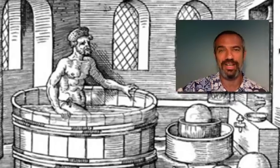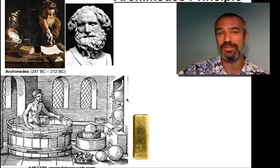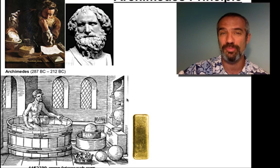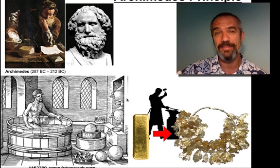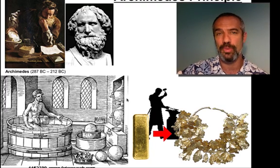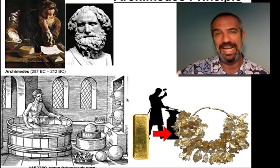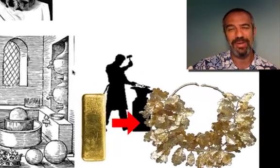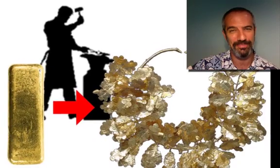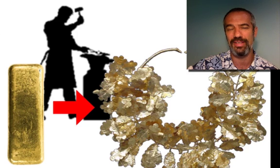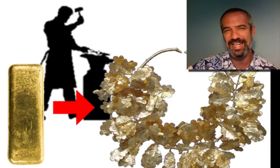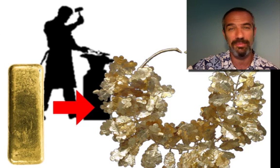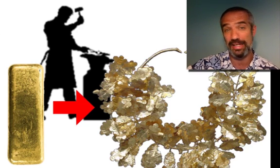King Hiero of Syracuse had taken a block of gold and given it to the goldsmith to make a crown out of — not the kind he was going to wear, but for a statue in a temple he was building. He got the crown back and thought it looked rather nice, but he was suspicious that perhaps the goldsmith had cheated him. The crown he got back weighed the exact same as the block of gold he had been given, but the king thought perhaps the goldsmith had taken out some of the gold, kept it for himself, and stuck in some less valuable metal like silver.